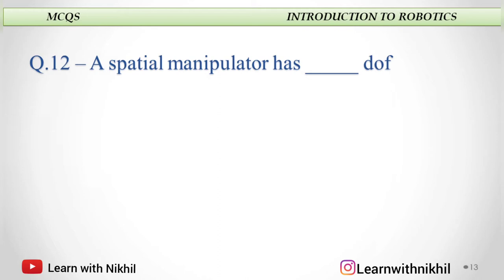Next: A spatial manipulator has dash degrees of freedom — two, four, six, or eight? In a spatial manipulator, it has six degrees of freedom.